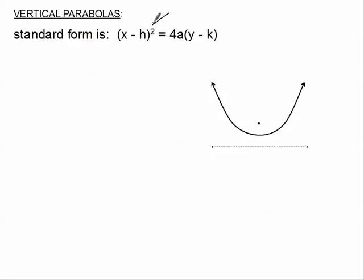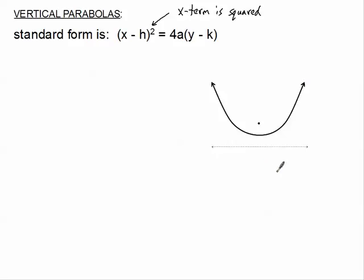In the vertical parabola, the x term is the one that's squared. You'll notice that only one term is squared — that's what forces this conic section to be a parabola. Since it's the x that's being squared, we're talking about a function, and therefore it's one of the vertical ones: one that opens upward or possibly one that opens downward.